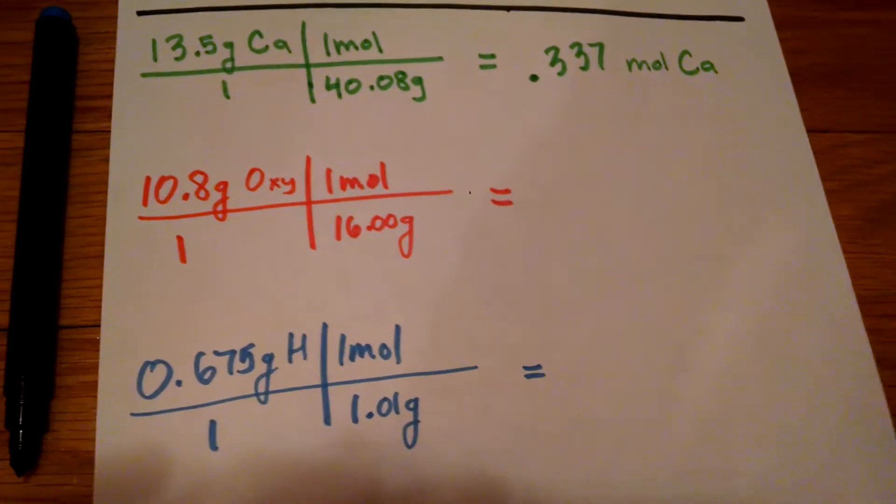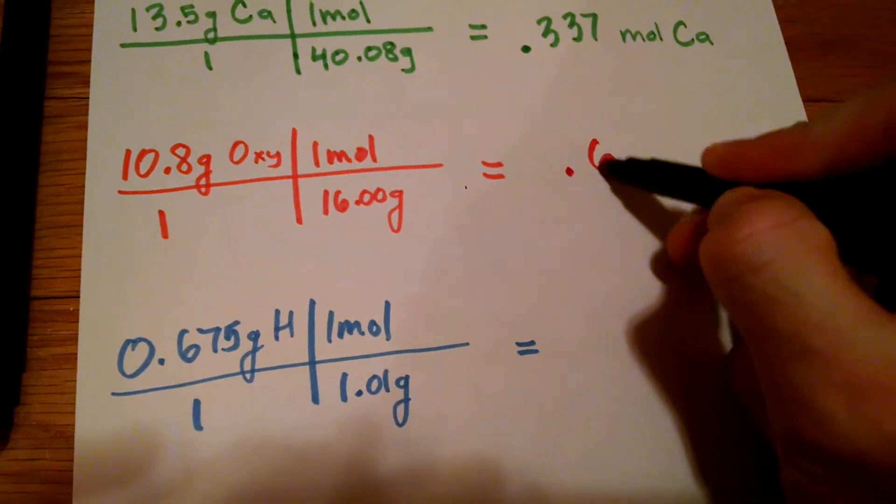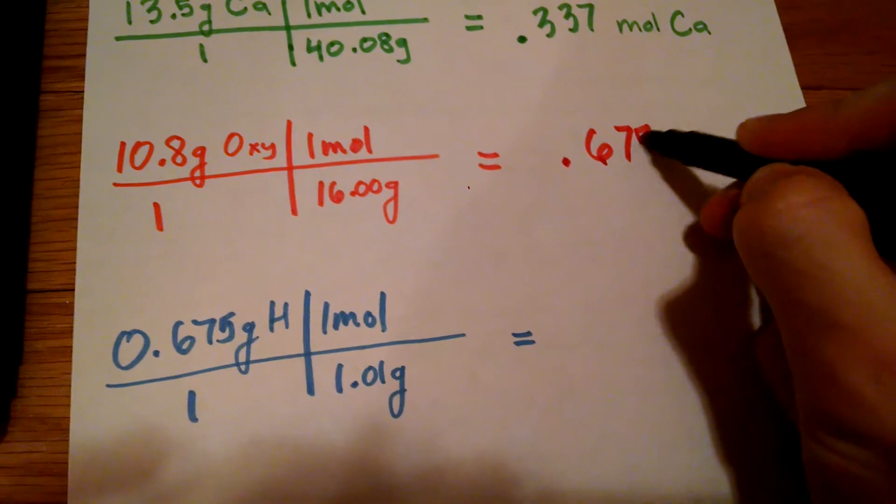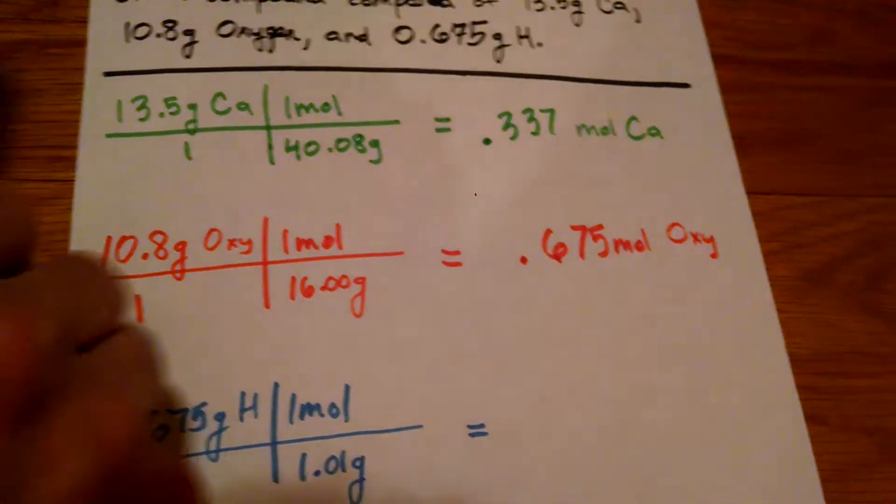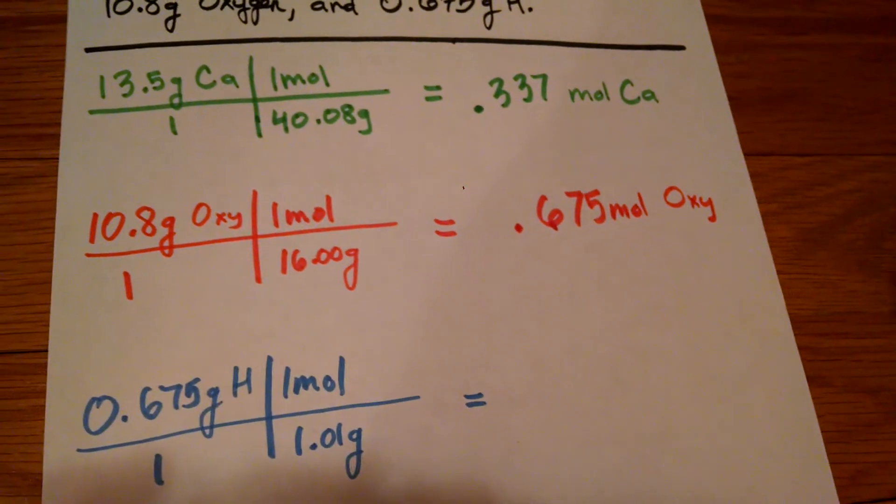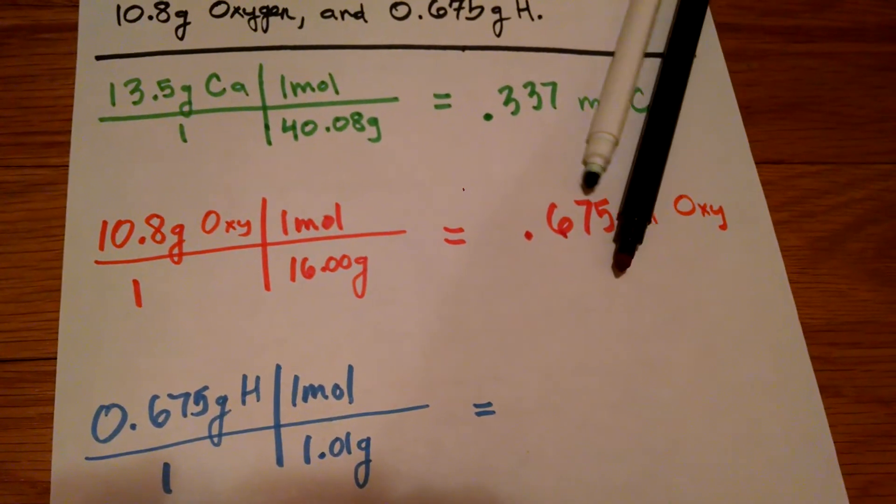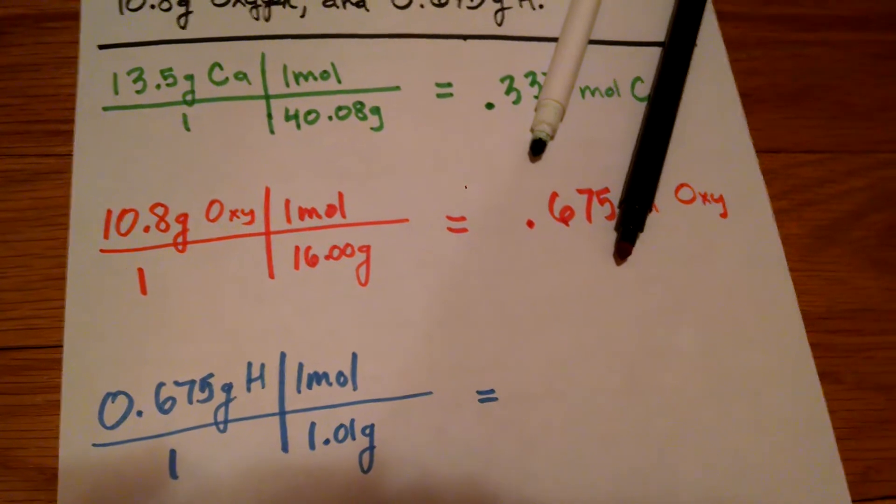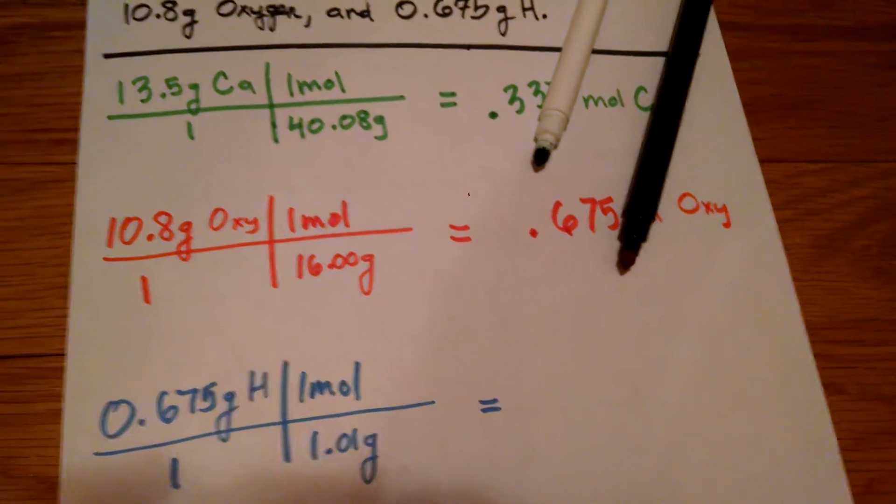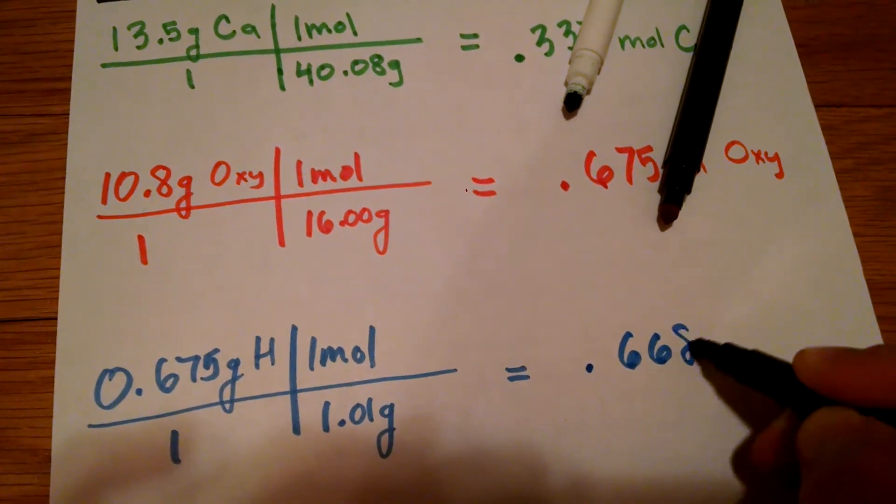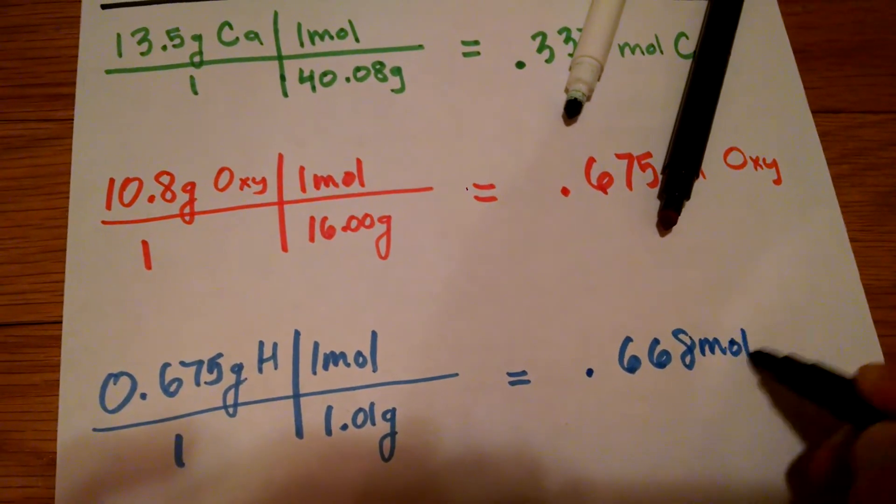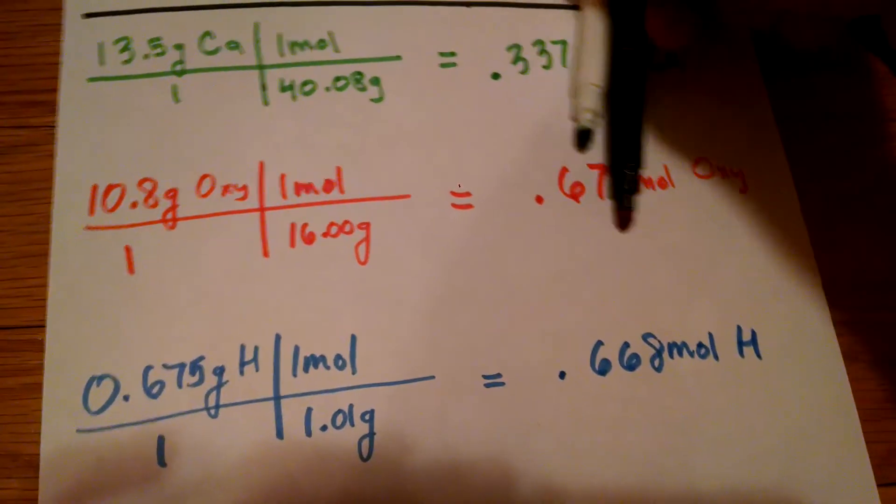The oxygen will do 10.8 over 16. We'll get, oh that's nice, exactly 0.675 moles of oxygen. And if we do 0.675 over 1.01, we're going to get 0.668 moles of H.